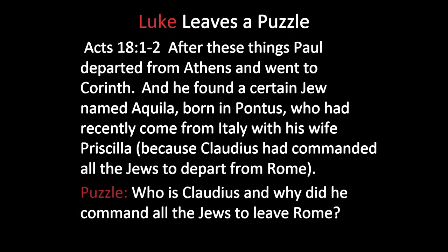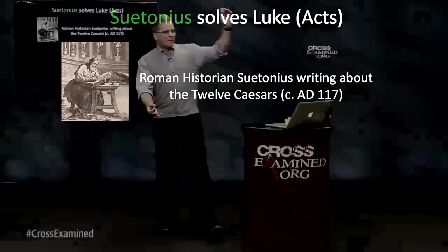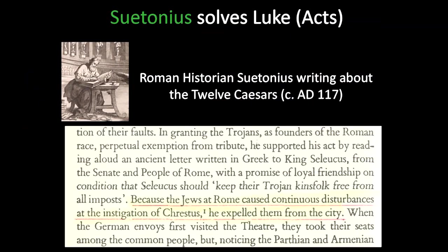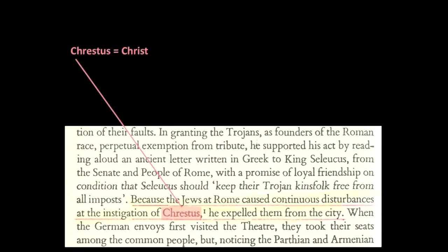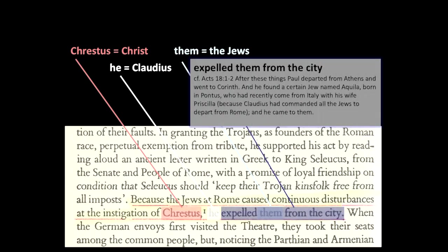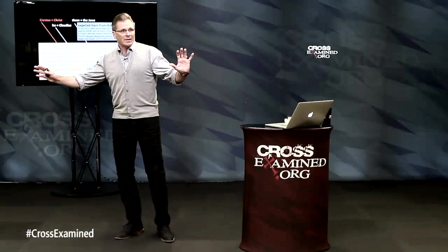But why did Claudius command the Jews to leave Rome? Suetonius helps solve this. Suetonius is a Roman historian writing about the twelve Caesars — there's a whole book on Claudius. Here's what it says: 'Because the Jews at Rome caused continuous disturbances at the instigation of Crestus, he expelled them from the city.' 'Crestus' is another word for Christ, and 'he' is Claudius. That's exactly what Luke says in Acts chapter 18 — Claudius had commanded all the Jews to depart from Rome. A Roman historian parenthetically verifying what Luke has written.